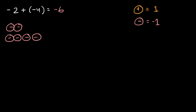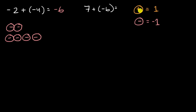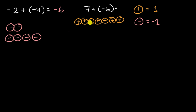Let's do another example. Let's say I now have positive seven plus negative six. How can I represent this with integer chips? Pause this video and think about it. Well, positive seven — you could view that as seven of these positive integer chips: one, two, three, four, five, six, and seven. And then negative six can be represented as six of these negative integer chips.